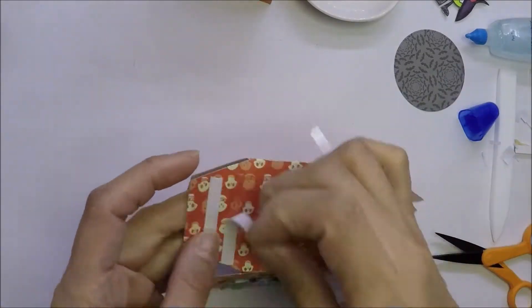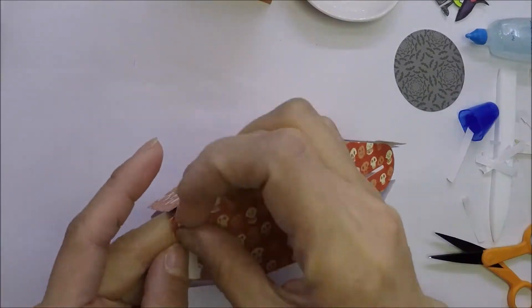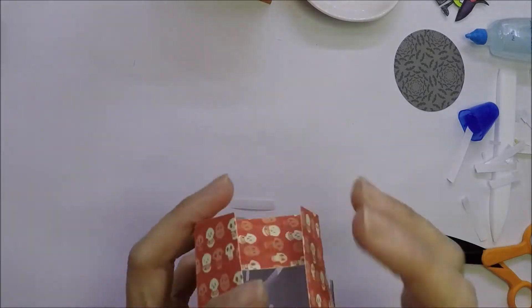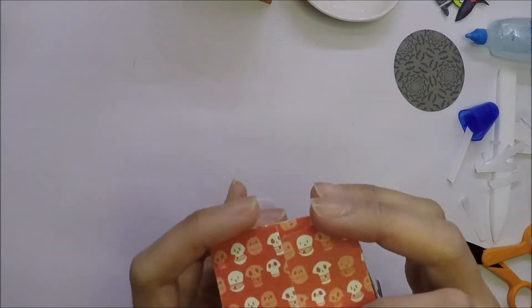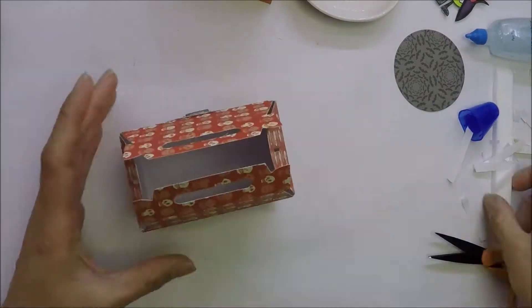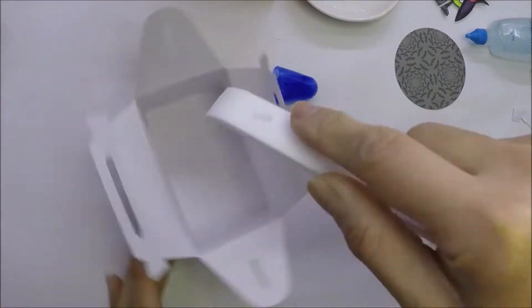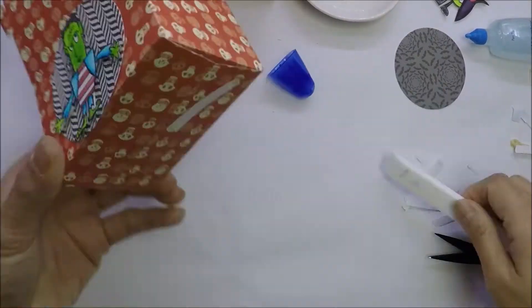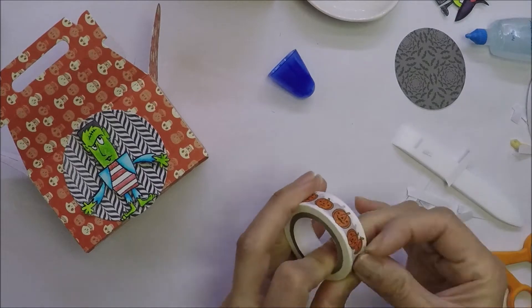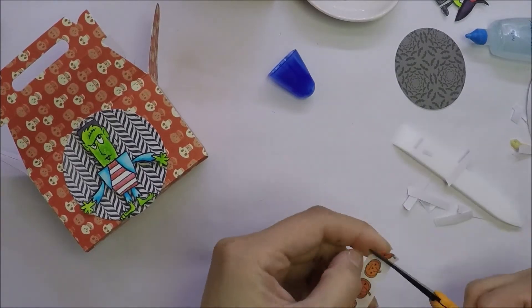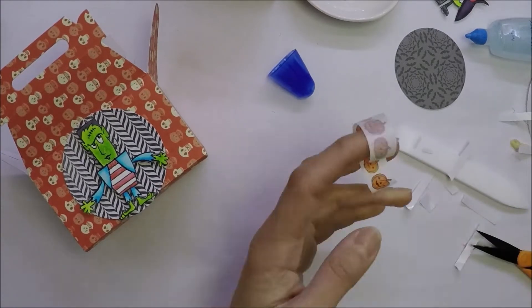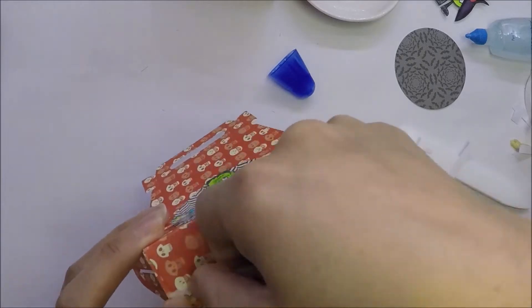And now it's time to adhere the bottom of the box together. I use my bone folder again to burnish the inside of the box and make sure it's adhered together well. I also use this pumpkin washi tape that I have in my stash to add a little something on the bottom of the box.